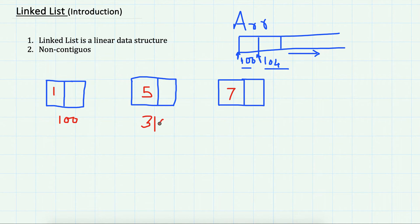And this third node may be at, say, 500. So these are not contiguous memory allocations. In the node, the first part is data, the actual data that is stored, and the second part just